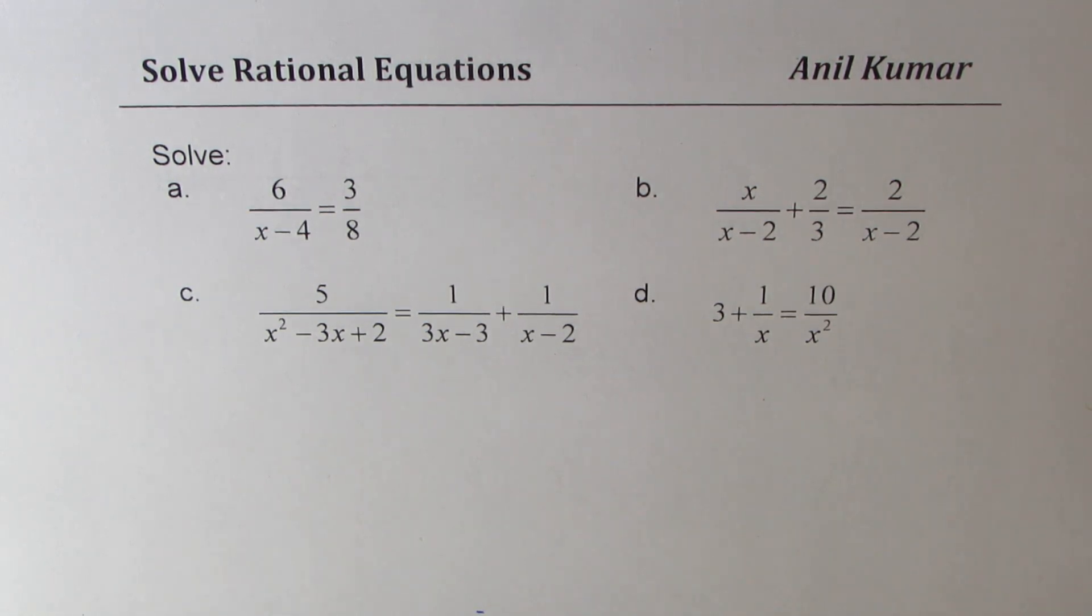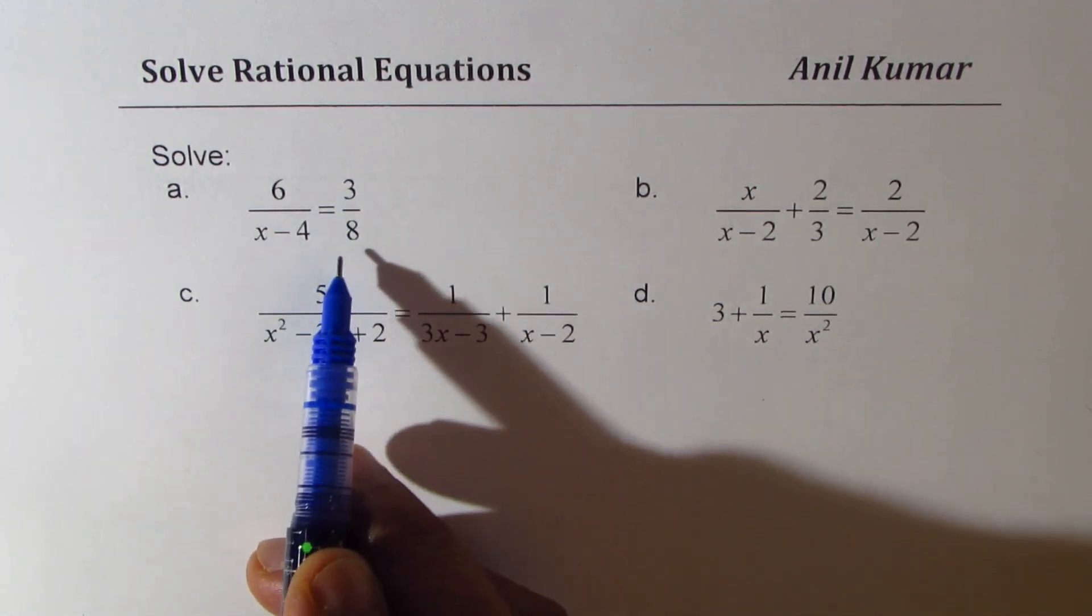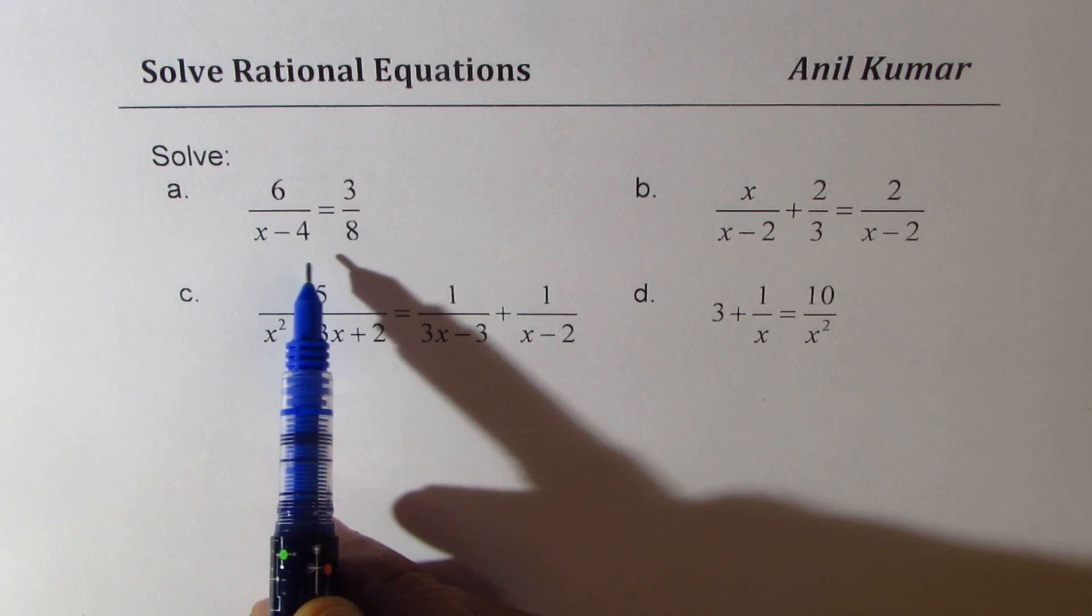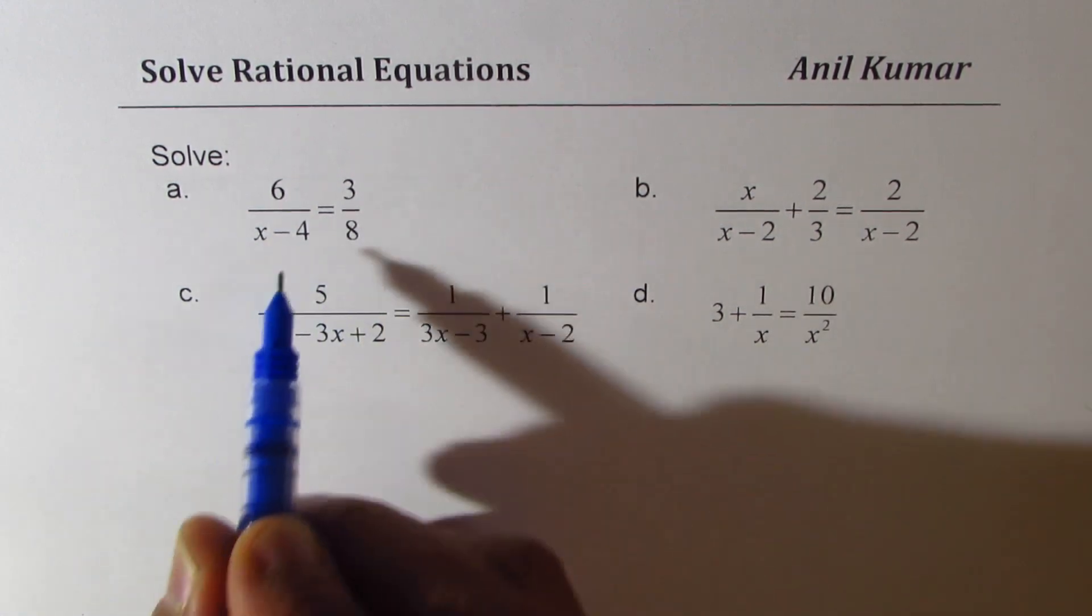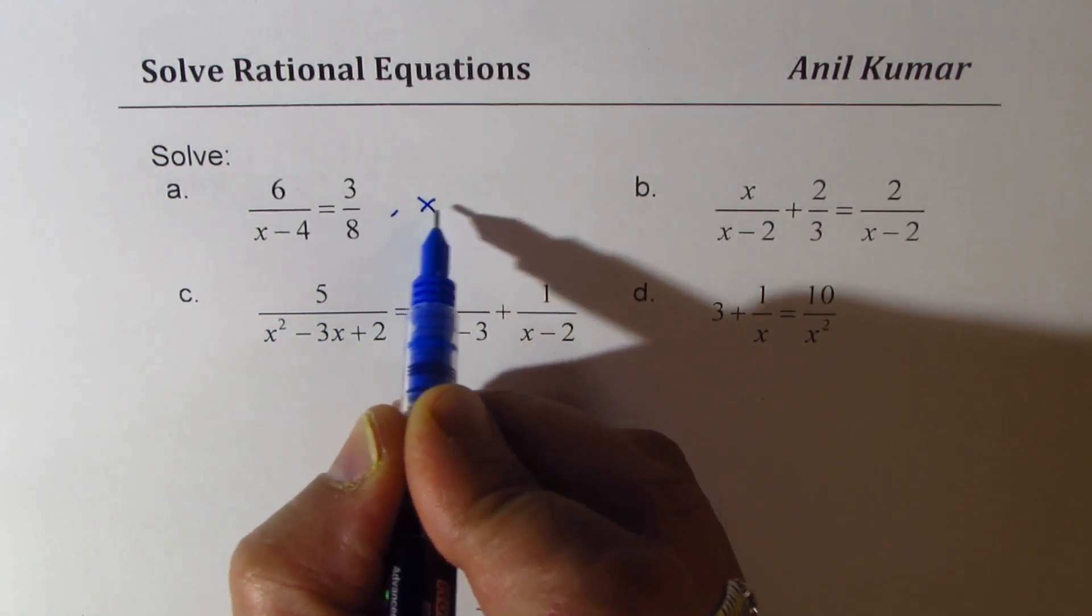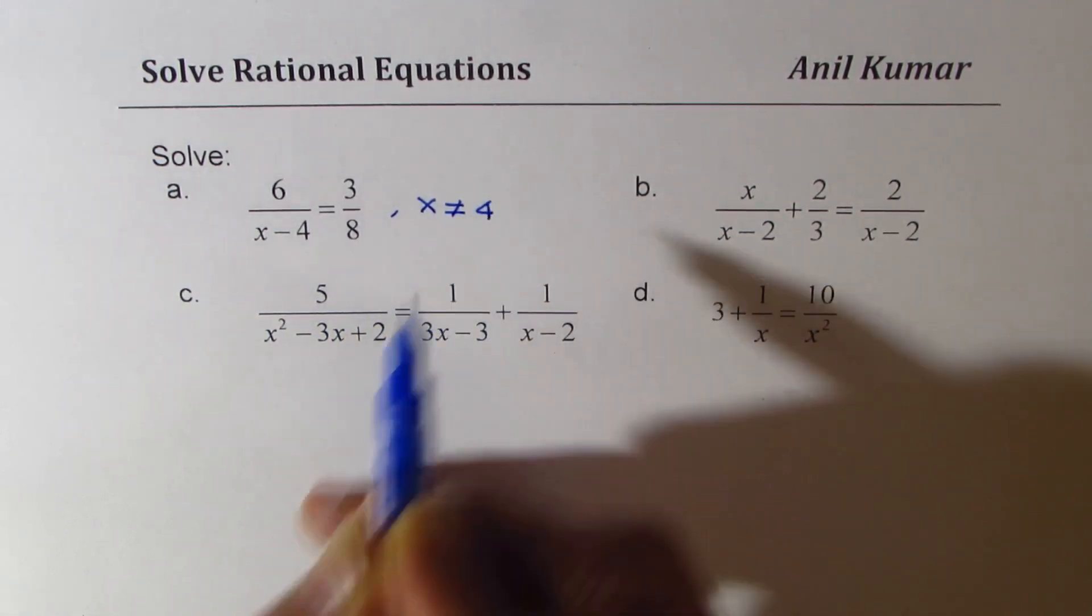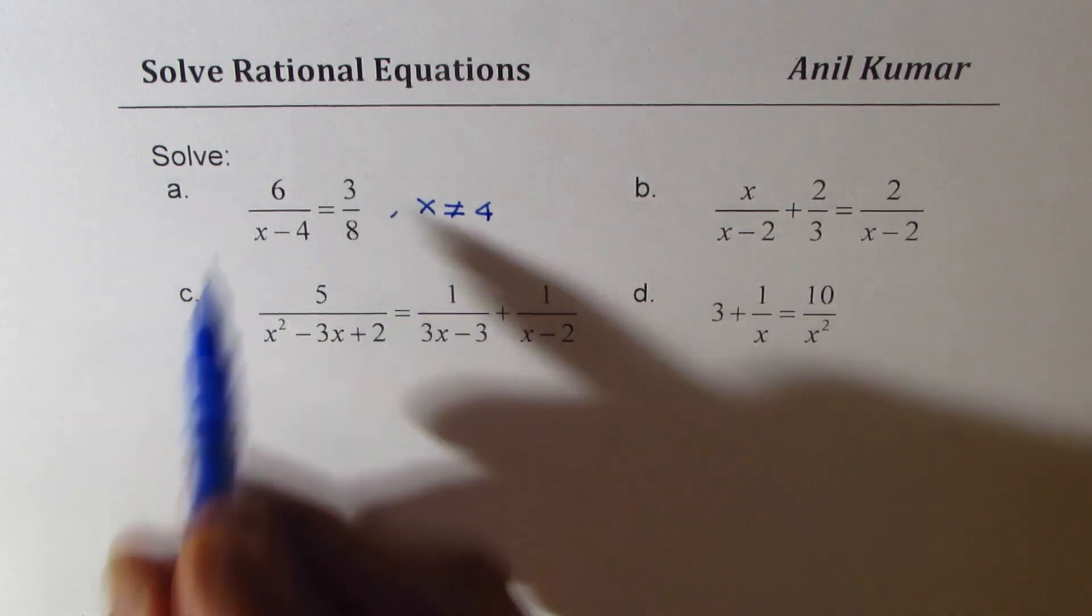The very first one is 6 over x minus 4 equals to 3 over 8. To solve really means to find the value of x. Once you get this kind of an equation, you should know that x should not be equal to 4. Now, let us see how to solve it.